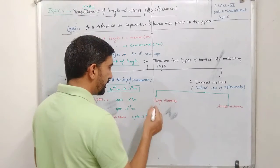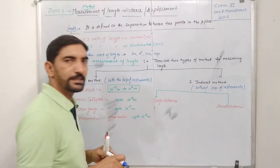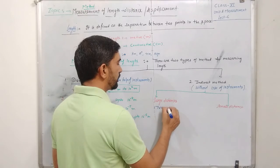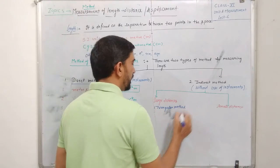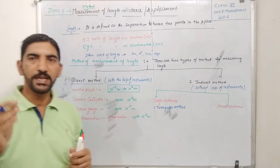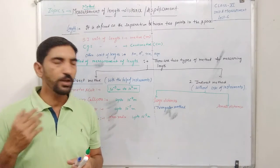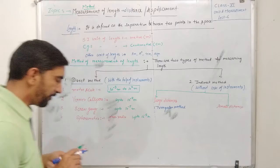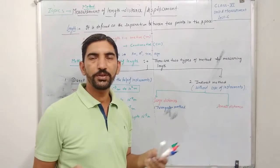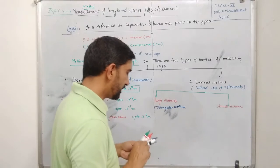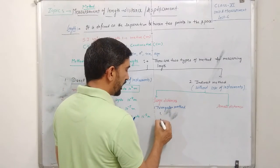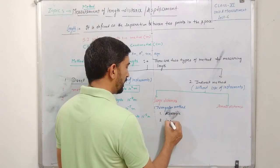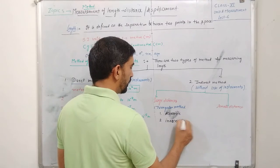The first indirect method for large distances is the triangular method, which we studied in 10th class. In this method, we use angle formation, elevation, and height to find distances. There are two cases: accessible objects, which are in our proximity and can be measured easily, and inaccessible objects, which are more difficult to reach.